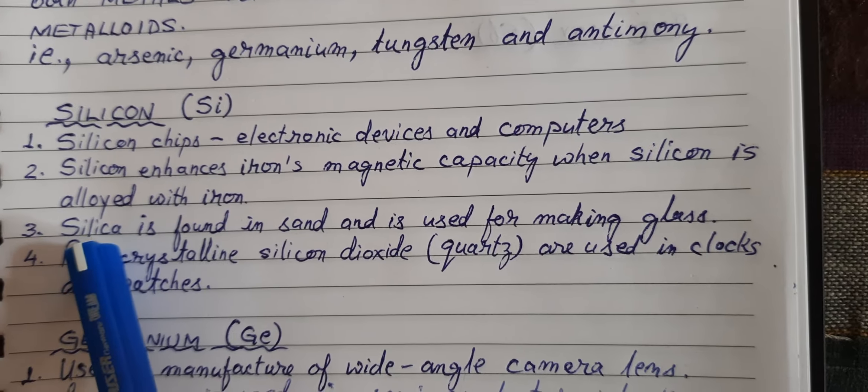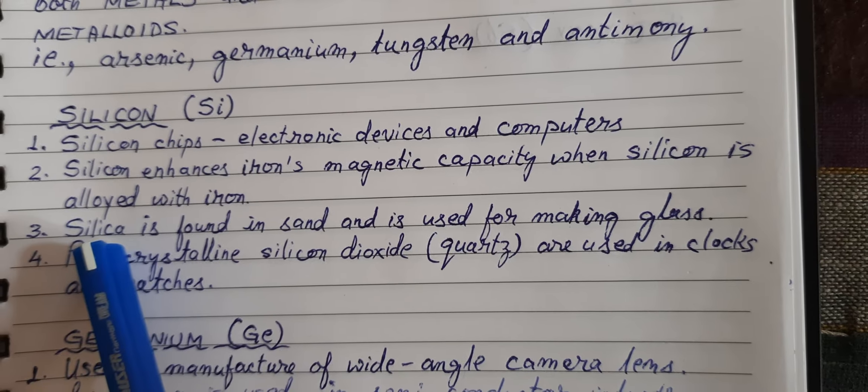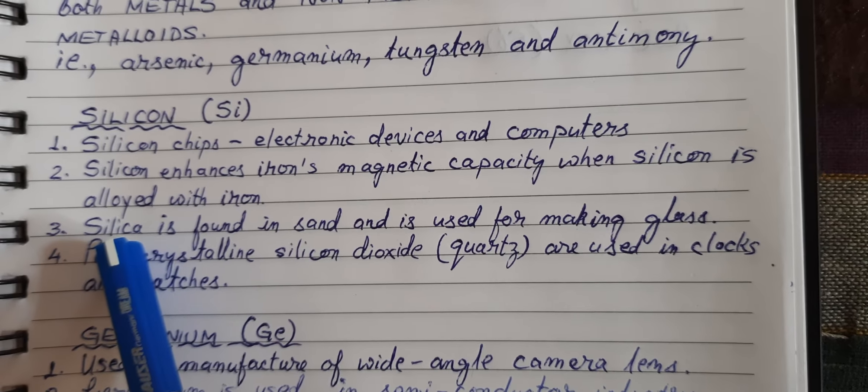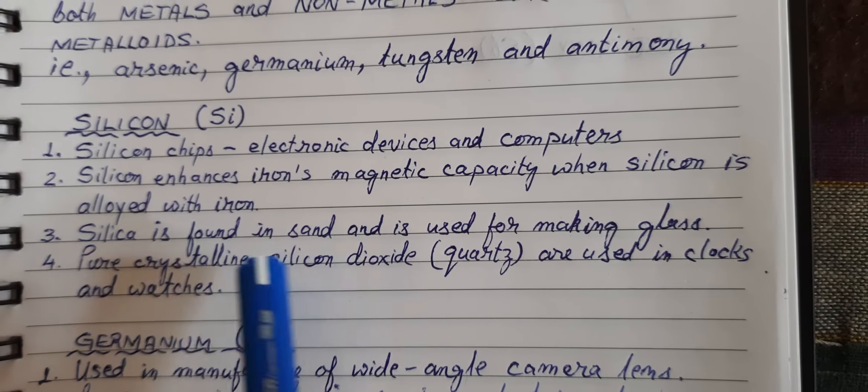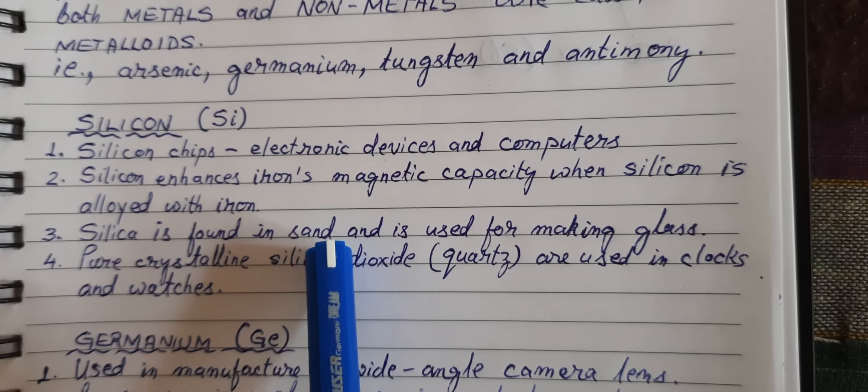Silica, that is silicon dioxide, is found in sand. This sand containing silicon dioxide is used for making glass.